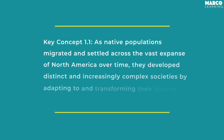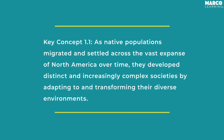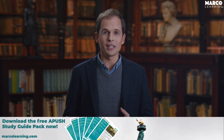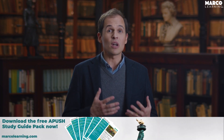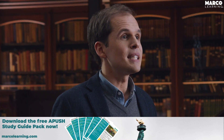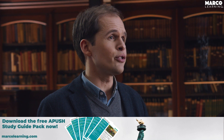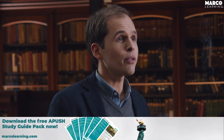Let's start with Key Concept 1.1 from the official AP course description. Here's what it says: 'As native populations migrated and settled across the vast expanse of North America over time, they developed distinct and increasingly complex societies by adapting to and transforming their diverse environments.' The basic idea is that in the time before Christopher Columbus and into the early 1500s, the pre-Columbian peoples of America were thriving.